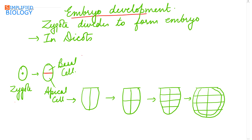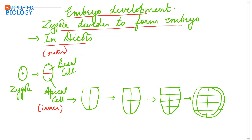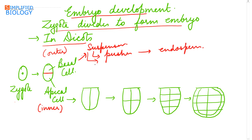After endosperm development, the embryo develops. The zygote divides to form the embryo. In dicots, the zygote first divides transversely to produce two cells: the inner apical cell that grows towards the chalaza, and the outer basal cell that grows towards the micropyle. The basal cell divides to form the suspensor, which pushes the apical cell into the endosperm. The suspensor is also haustorial in nature — it absorbs the stored food from the endosperm and provides it to the developing embryo.